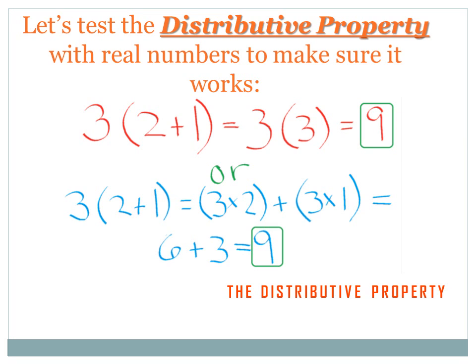Well, let's try it with the Distributive Property. I've got 3 times (2 plus 1). The Distributive Property says I can multiply the 3 times both of the numbers around the operant within the brackets, and I won't change anything. So I've got 3 times 2 plus 3 times 1. That equals 3 times 2, which is 6, plus 3 times 1, which is 3. 6 plus 3 equals 9. First way we did it, we got 9. Second way we did it, we got 9. It must work.